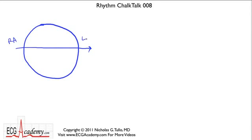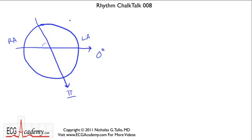Lead 1 goes from right arm to left arm and is designated as 0 degrees. For leads 2 and 3, we divide the circle into equal parts. Leads 2, 3, and AVF are the inferior leads, so they point toward the bottom part of the circle. I always tell people to remember that in English we read top-down and left-to-right — so draw a line 60 degrees below the horizontal: that's lead 2, and lead 3 is the last inferior lead further down.